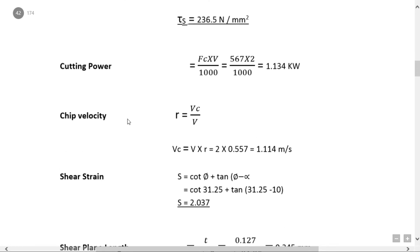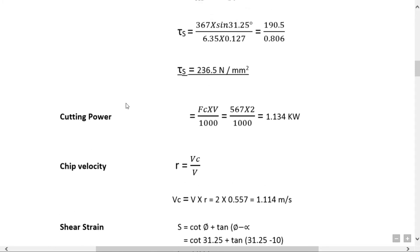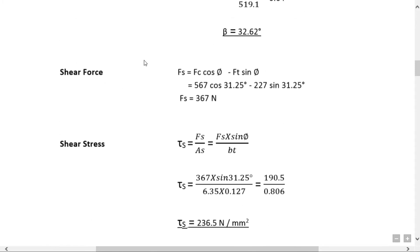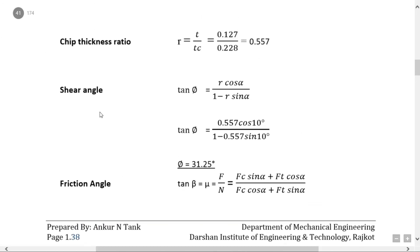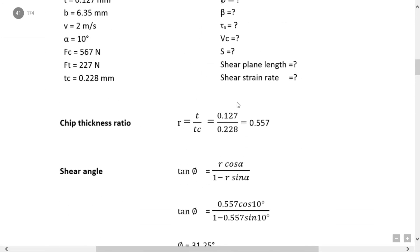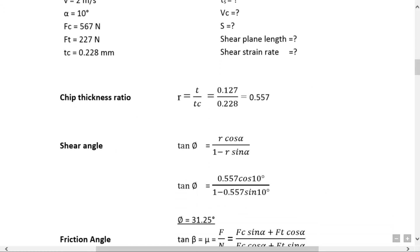In this problem we determined 8 terms: chip thickness ratio, shear angle, friction angle, shear force, shear stress, cutting power, chip velocity, shear strain, shear plane length, and shear strain rate. In this way you solve every problem in the merchant circle diagram for a single point cutting tool.